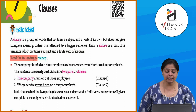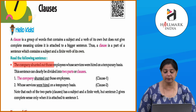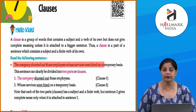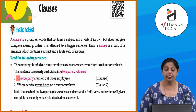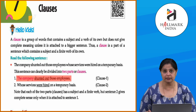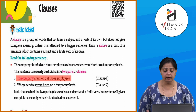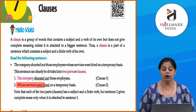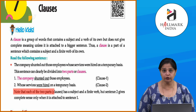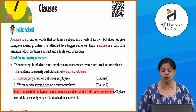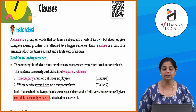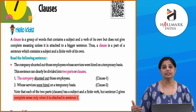Read the following sentence: 'The company shunted out those employees whose services were hired on a temporary basis.' This sentence can clearly be divided into two clauses. The first clause is 'The company shunted out those employees.' The second clause is 'whose services were hired on a temporary basis.' Note that each of the two clauses has a subject and a finite verb.